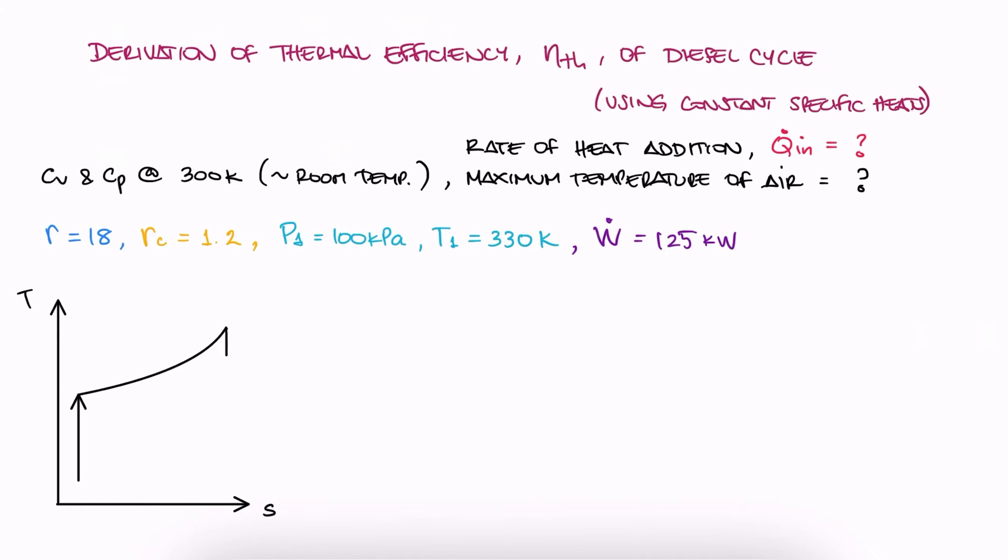We know from the TS diagram shown in the main lecture video that the maximum temperature will occur after the heat addition, or what is the same, the combustion of the fuel. Since we have the temperature at 1, we need to find a way to go from 1, the known state, to 2, so that we can get to 3.